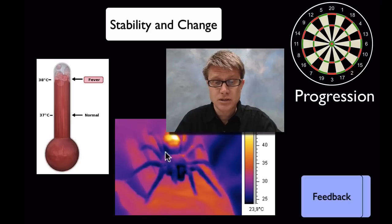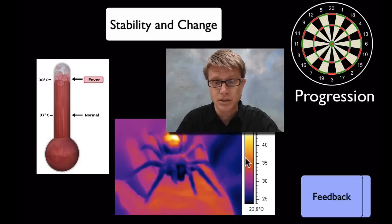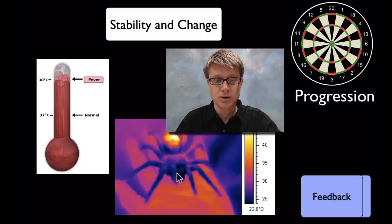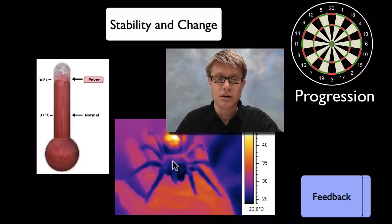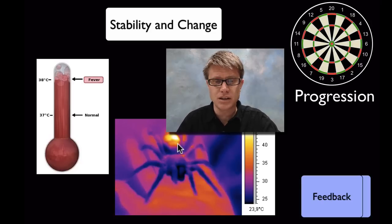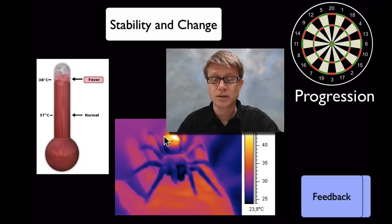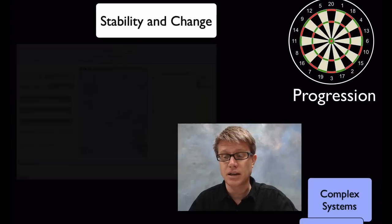This spider here — we're looking at it with a thermal imaging camera. You can see the person holding it has a body temperature around 37 degrees Celsius. But if you look at the spider itself, its body is really, really cold. So now we've got an endotherm and an ectotherm. This spider is not maintaining a stable internal environment — it's cold-blooded. But you can see it has a really warm abdomen. Feedback loops are used to maintain that internal stability.